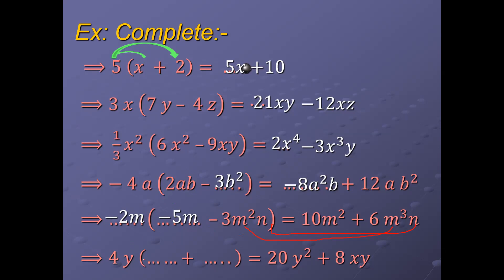Next one: 4y times what equals 20y². Make a division operation: 20 divided by 4 equals 5, and y² divided by y equals y. So the result will be 5y. Next one: 4y times what equals 8xy? 8 divided by 4 equals 2, coefficient with coefficient. Variable with variable: x divided by 1 equals x, and y divided by y equals 1. So the result will be 2x.